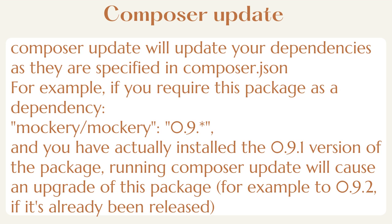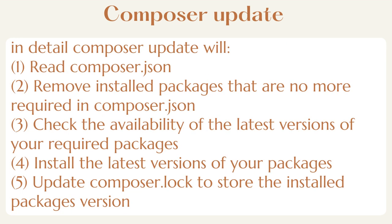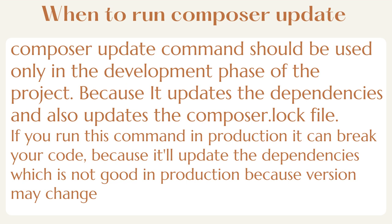For example, if you require a package like mockery/mockery 0.9 and you have actually installed version 0.9.1, running Composer Update will cause an upgrade of this package — for example, to 0.9.2, if it has already been released. In detail, Composer Update will: 1. Read composer.json. 2. Remove installed packages that are no longer required in composer.json. 3. Check the availability of the latest versions of your required packages. 4. Install the latest versions of your packages. 5. Update composer.lock to store the installed package versions.